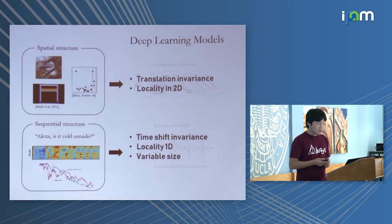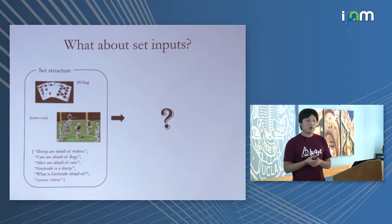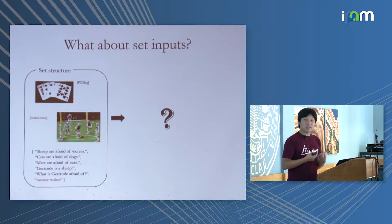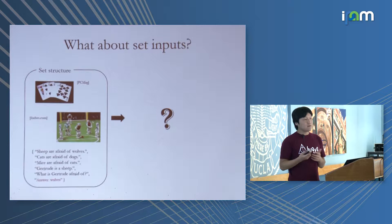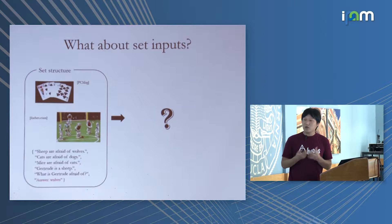We have a model for 2D grid structure and 1D structure, but what about sets? In a set — like if you're playing poker and have five cards in your hand — that's not a sequence and not an image, it's a set. And what if you have a set of facts as input? How do you process them? We didn't have a model that could handle that at the time.